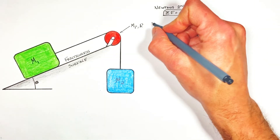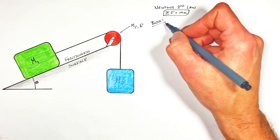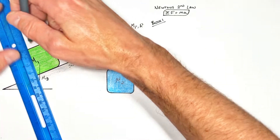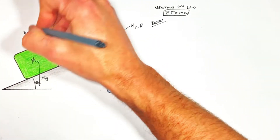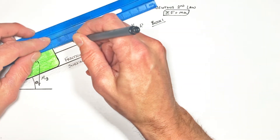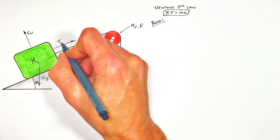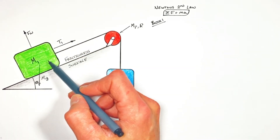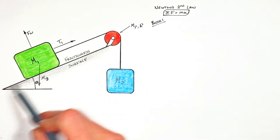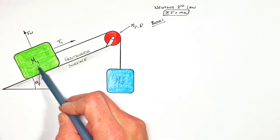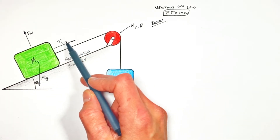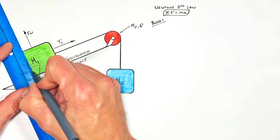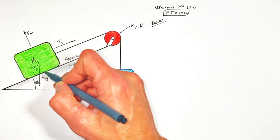Starting with the block on the incline, I'm going to call that block number one. There are several forces acting on this block: the first being gravity, then there's the normal force, as well as the tension in this string. I'm going to call that tension T sub one, or the tension in the string which is connected to block number one. Now applying Newton's second law within the plane of this hill, there are two forces which are going to cause the block to accelerate: the first being T1, and the other being the component of gravity which is down the hill. I'm going to call that component FD, for the force down the hill.